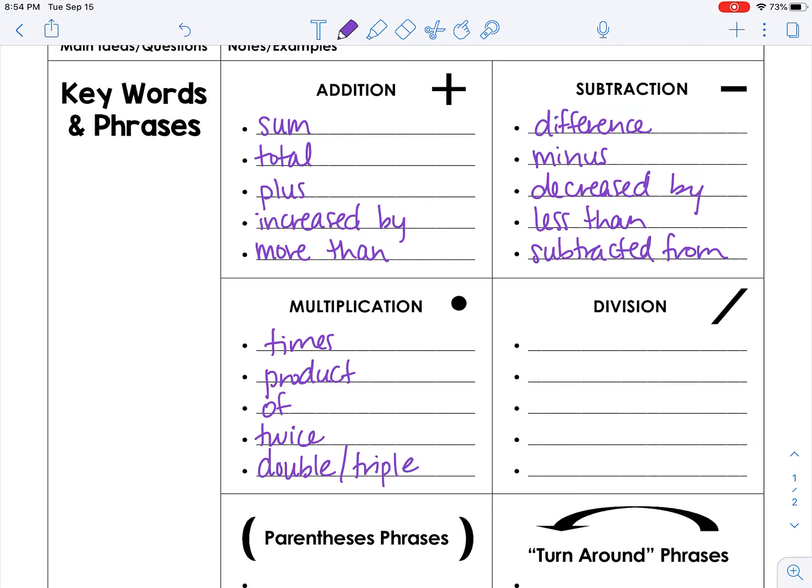For multiplication, we have times, product, of, twice. Twice means times two, double, which is also times two, and triple, which is times three.